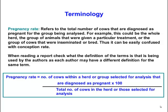So pregnancy rate equals the number of cows within a herd or group diagnosed as pregnant divided by the total number of cows in the herd. This figure can differ from conception rate. It just pays to check with the author of the document you're reading to find out what definition they are using, because it may vary.